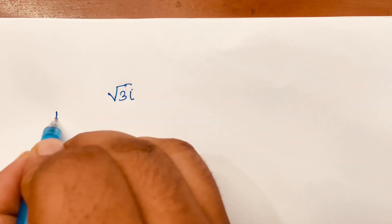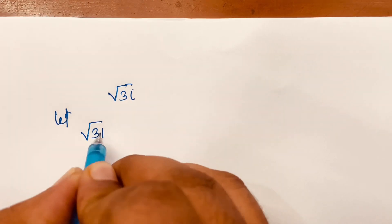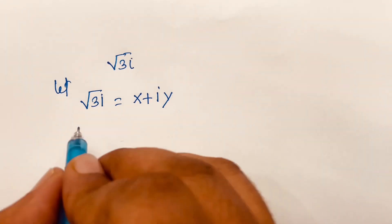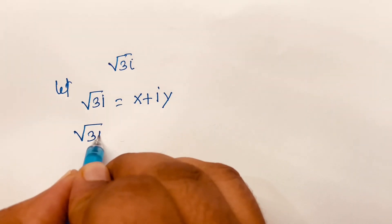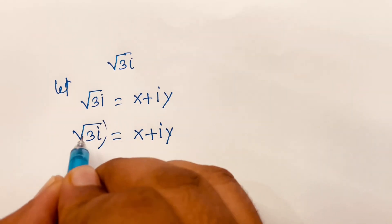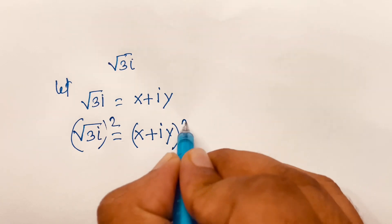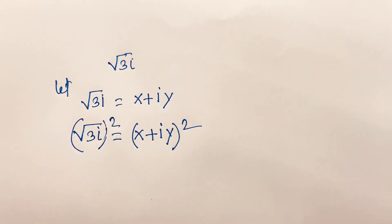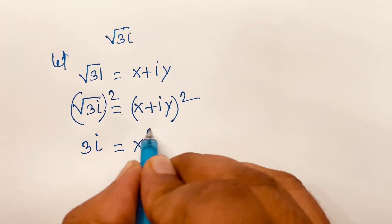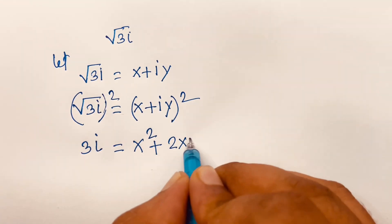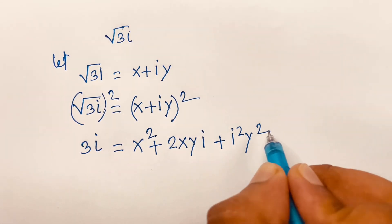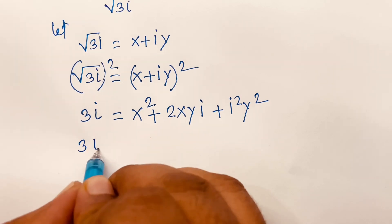Let square root of 3i be equal to x plus iy. I just square both sides, then the square root is cancelled, so we find out 3i is equal to x squared plus 2xy plus y squared.